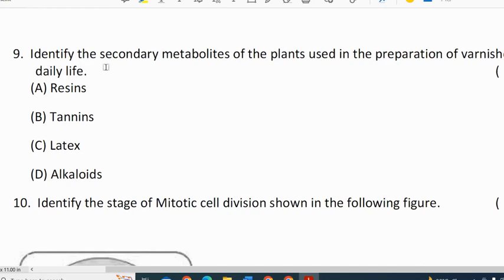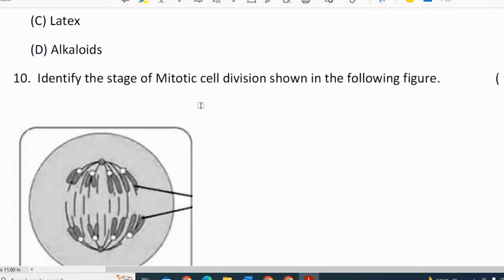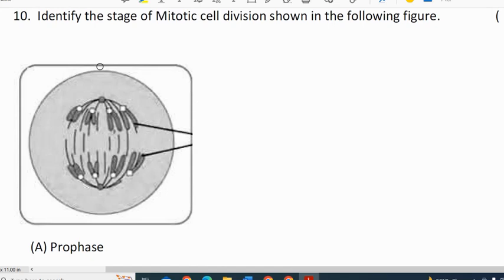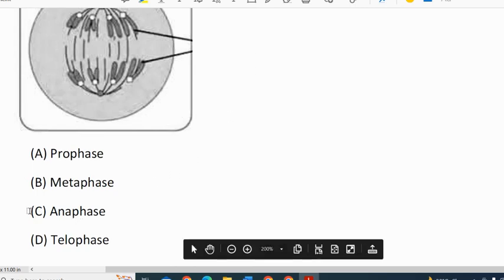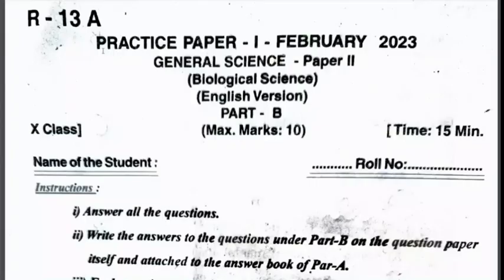Ninth question: identify the secondary metabolite of plants used in the preparation of varnishes in daily life. The correct option is resins.